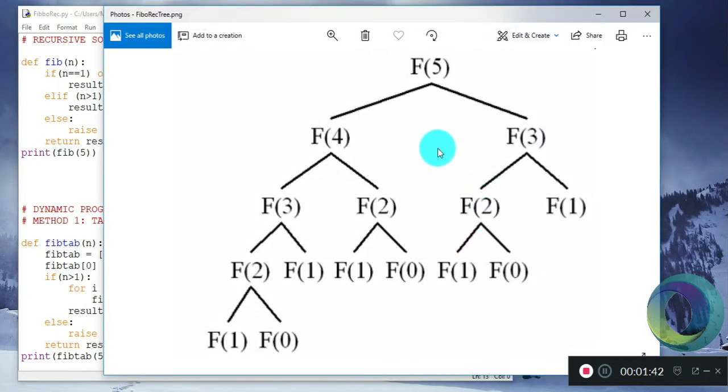F of 5 splits into F of 4 and F of 3. Now F of 4 and F of 3 are not known, so it again calls F of 3 and F of 2, and this tree grows.